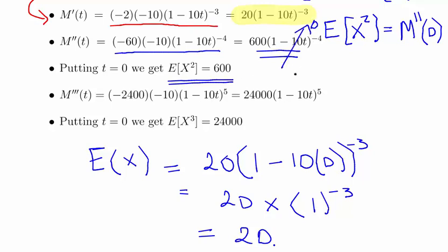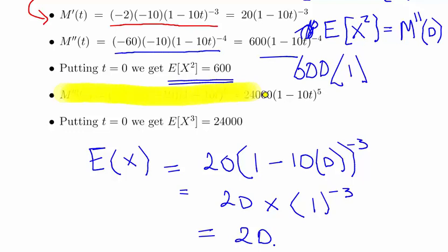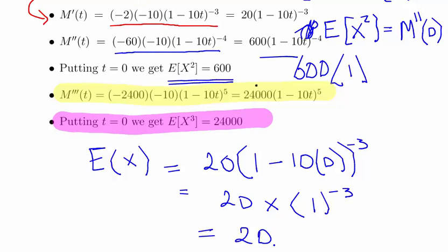For E[X³], we differentiate one more time and evaluate at t = 0. Differentiating gives us minus 2400 times minus 10 times (1 minus 10t) to the power of minus 5, which is 24,000 times (1 minus 10t) to the minus 5. Evaluating at t = 0 gives E[X³] = 24,000.